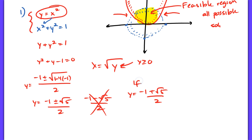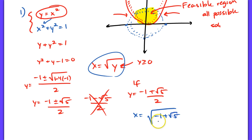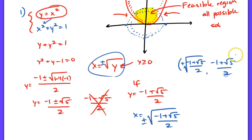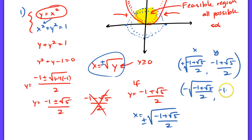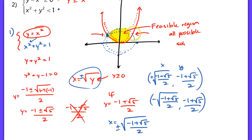So we can throw out the negative value and use y equals negative 1 plus root 5 over 2. If y equals negative 1 plus root 5 over 2, then x equals the square root of that value — plus or minus. So we have two unique coordinates: positive square root of (negative 1 plus root 5 over 2), comma, (negative 1 plus root 5 over 2); and the other is the negative square root of (negative 1 plus root 5 over 2), comma, (negative 1 plus root 5 over 2). These represent the two intersection points.